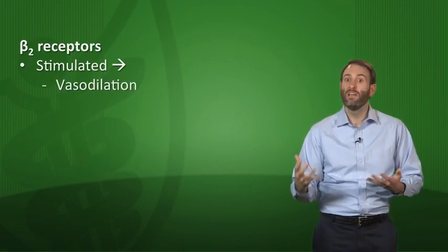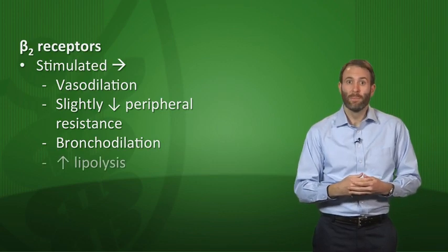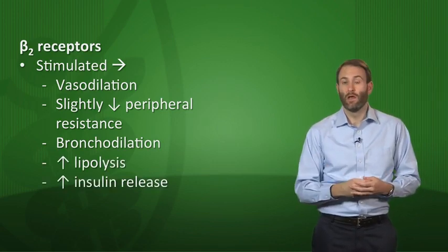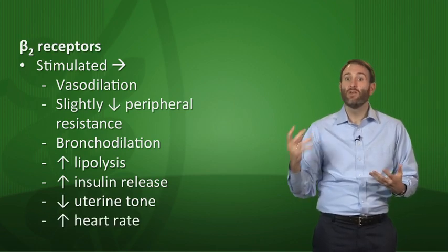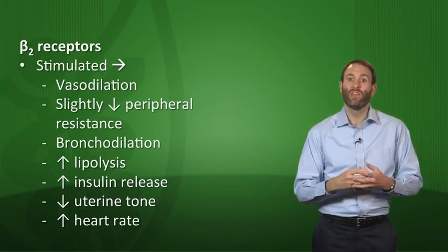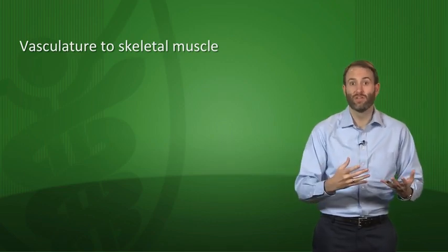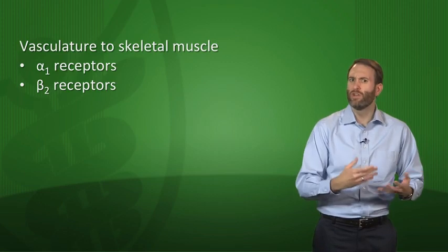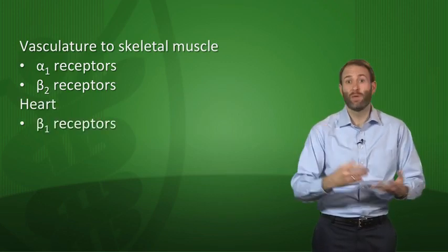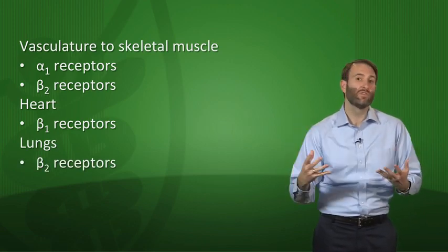Beta-2 stimulation generally increases heart rate, but not through direct cardiac stimulation — rather as a compensatory response to the drop in blood pressure from vasodilation. Adrenergically innervated organs tend to have a predominance of one receptor type. For example, vasculature to skeletal muscle has both alpha-1 and beta-2, with beta-2 predominating. The heart contains mostly beta-1 receptors, and the lungs have a lot of beta-2 receptors.